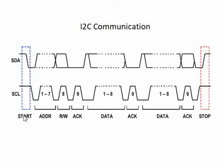When the master wants to start a communication, as shown here indicated by blue, it sends a start condition: first SDA goes high and then SCL goes high. Then an address is sent, followed by a read or write command, and then an ACK is received. Based on that, the next communication proceeds in I2C.